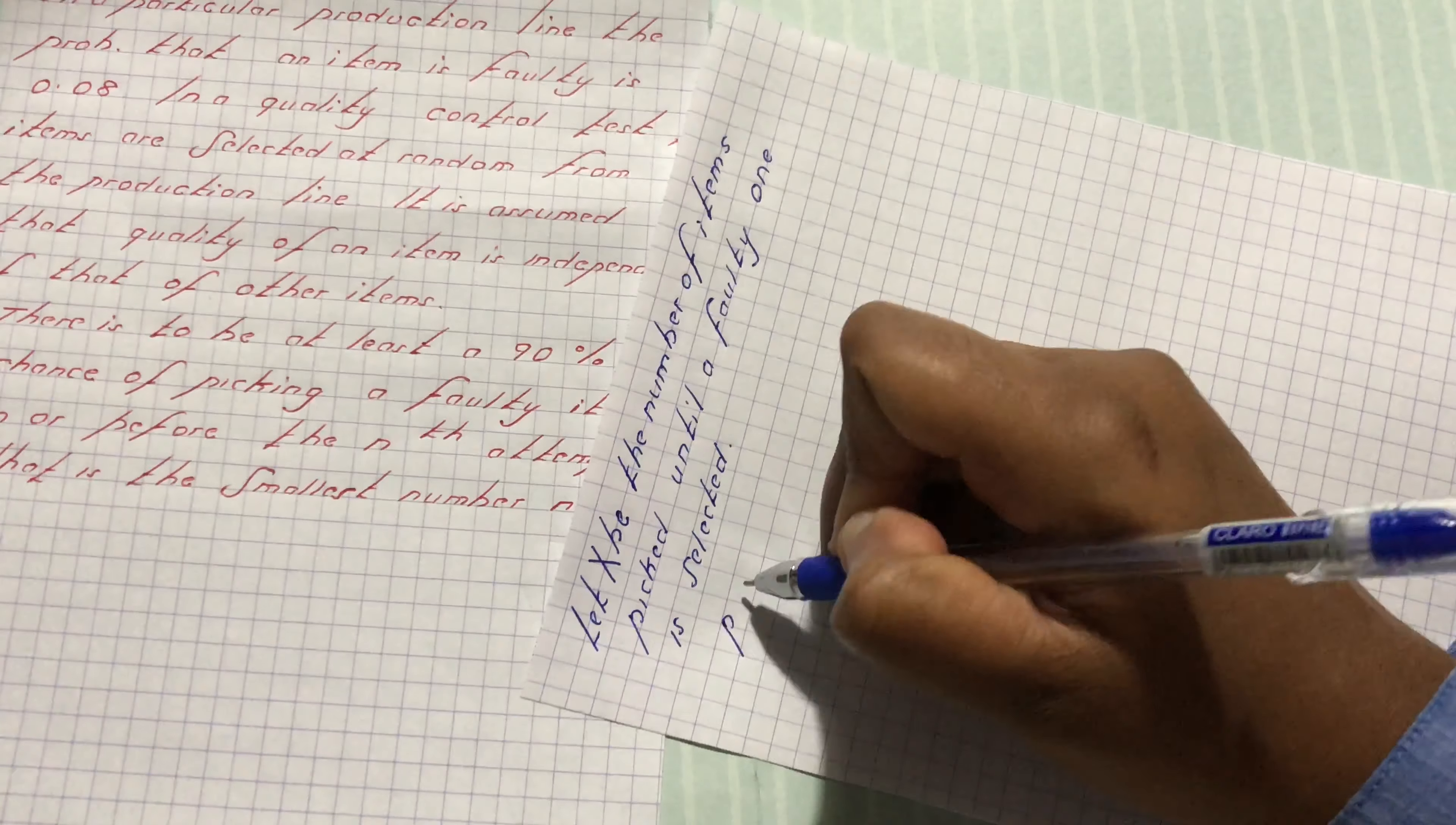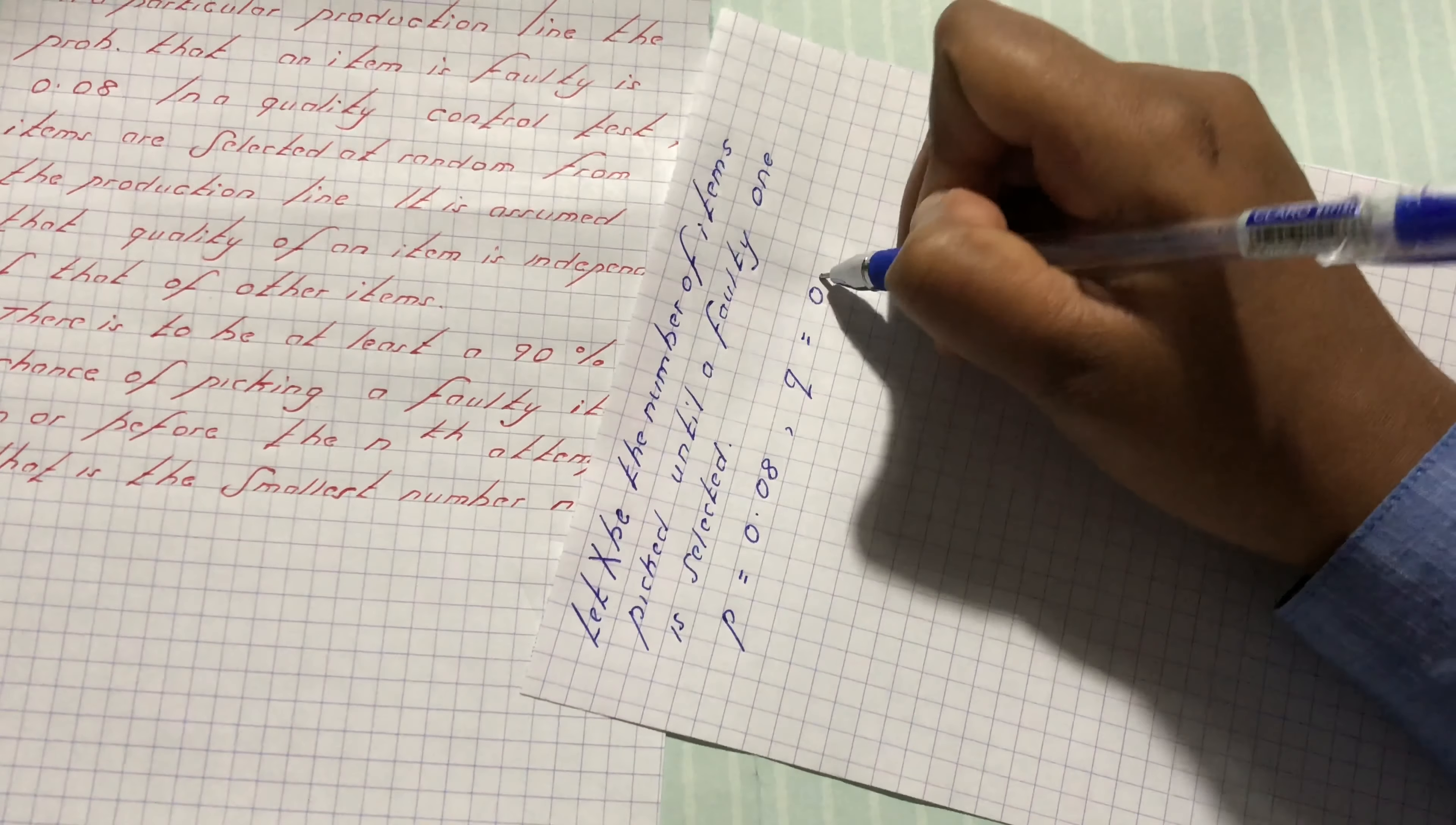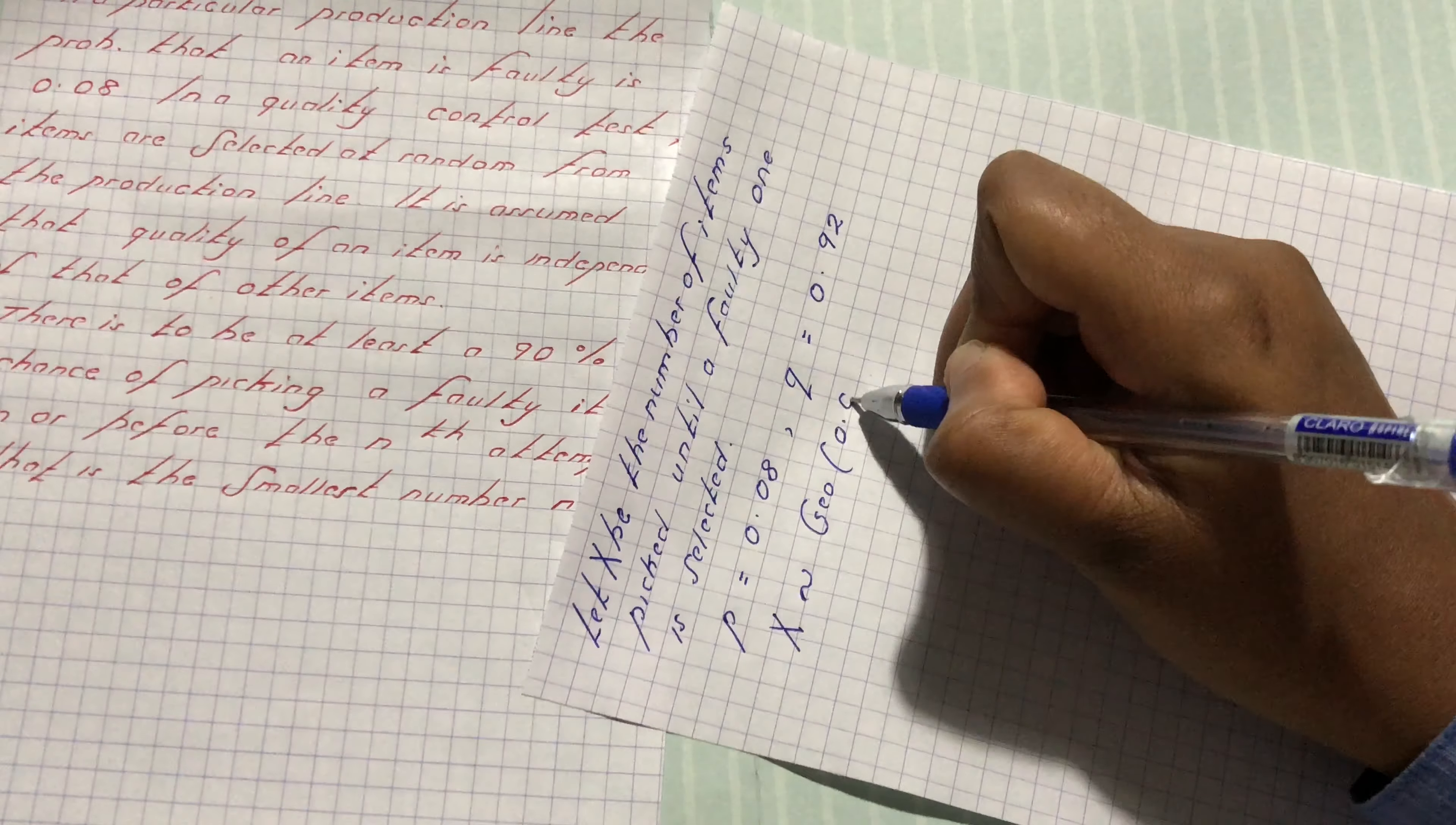we have P is equal to 0.08. So P is the probability of success. From P we get Q which is 0.92. We have the model x follows Geo(P) which is 0.08.